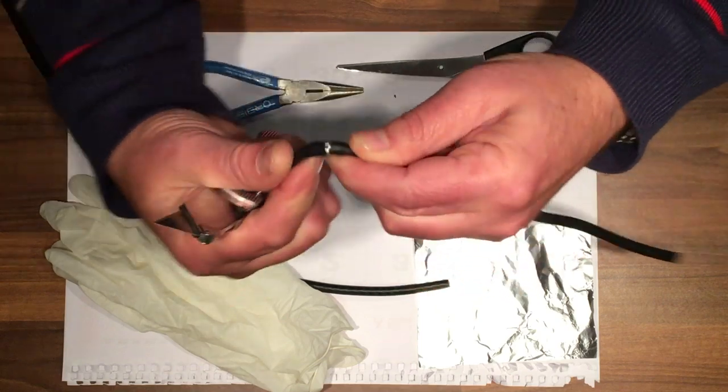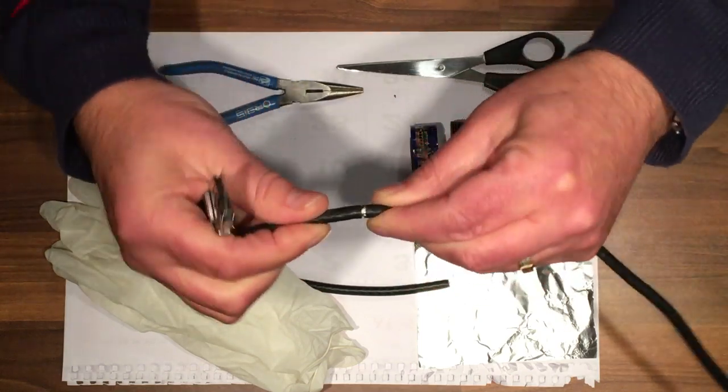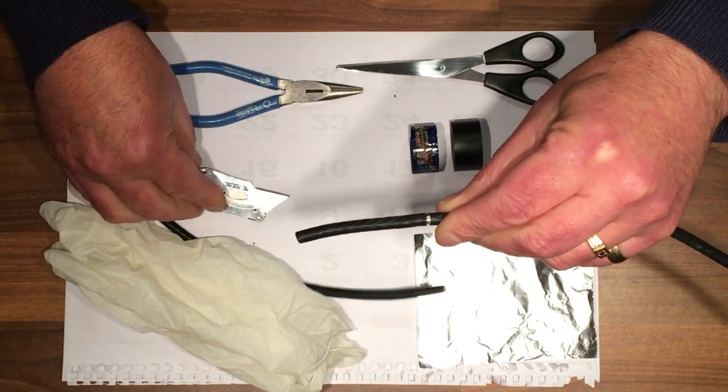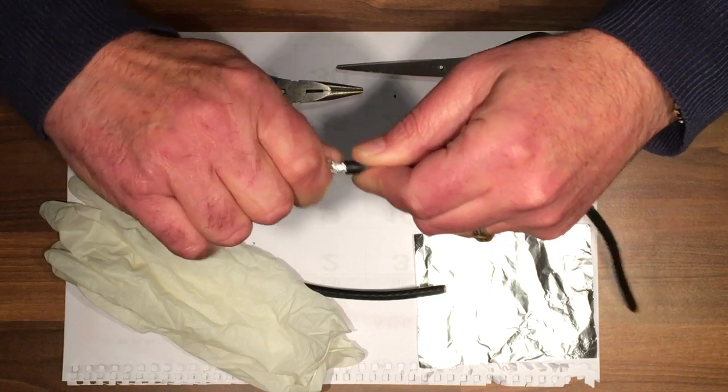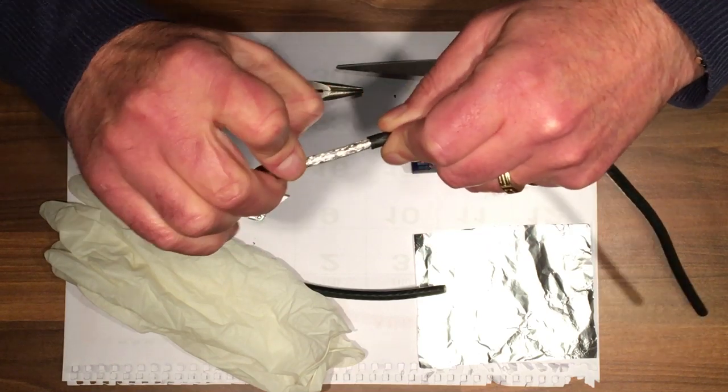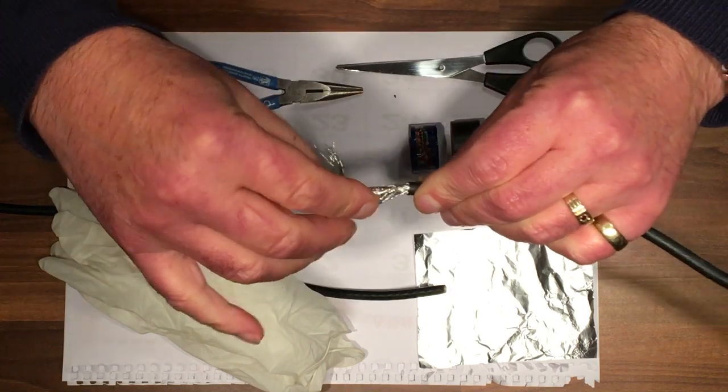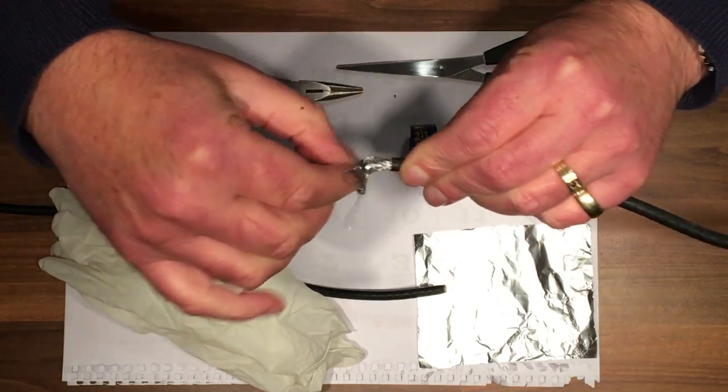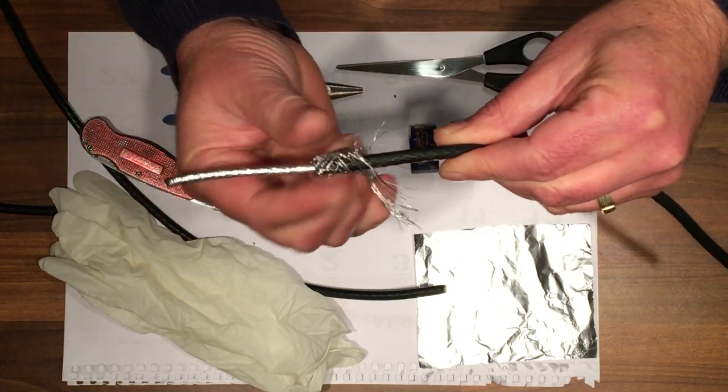Bend it back and you'll see the screen or braiding or shield, and just pull it off. Fold back the screen and do that on both cables.